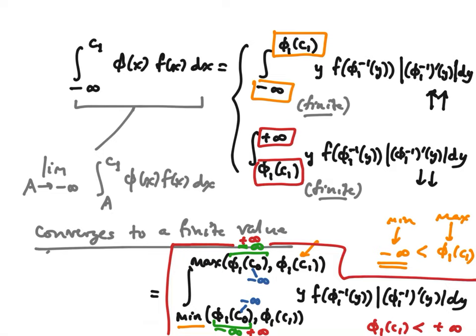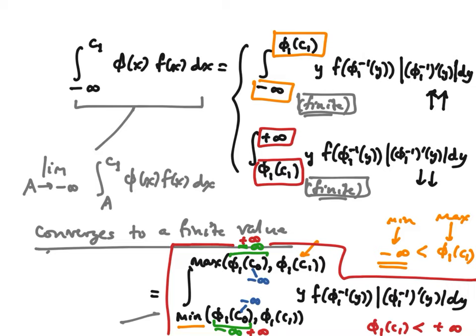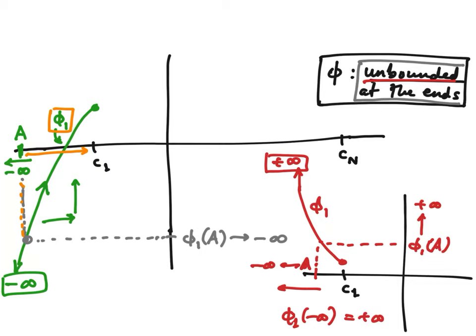In both the green and red cases, we get the correct formula, and the answer is finite in both cases. Now, that's in the case where the function is unbounded at both ends. What if there's a horizontal asymptote? That should be okay as long as capital F doesn't have any bad points — as long as capital F is continuously differentiable everywhere, there was no reason to forbid the horizontal asymptote.